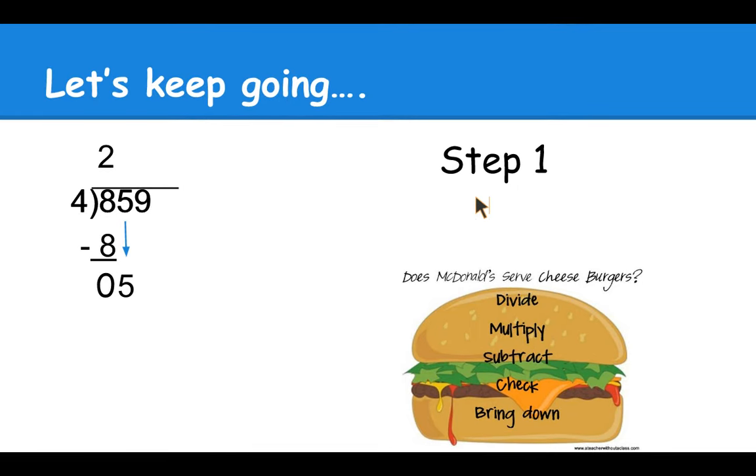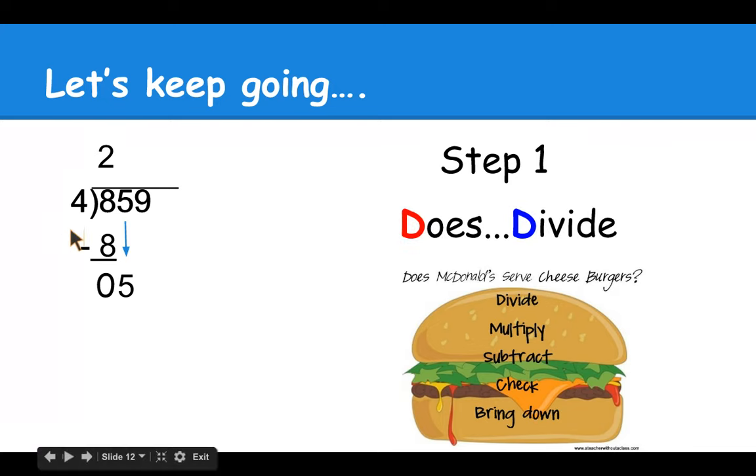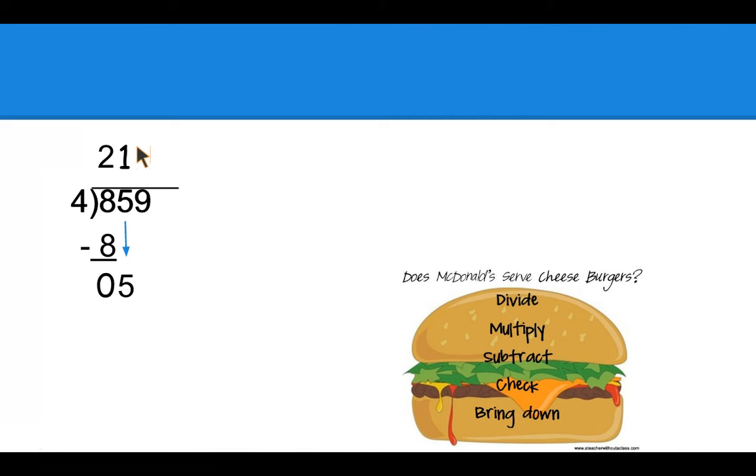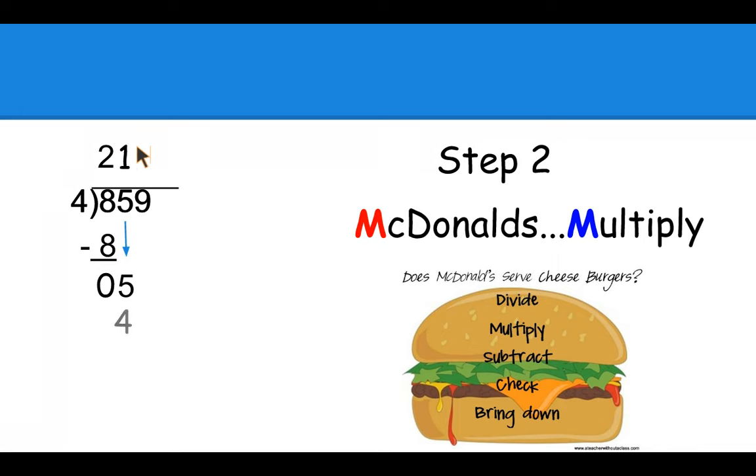Step one again, divide four into five, which goes one time. Step two, M does McDonald's, multiply. One times four equals four.